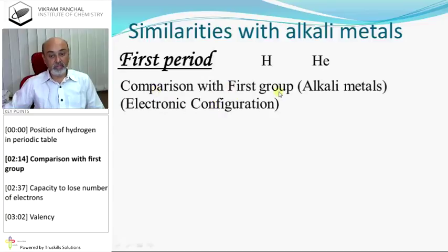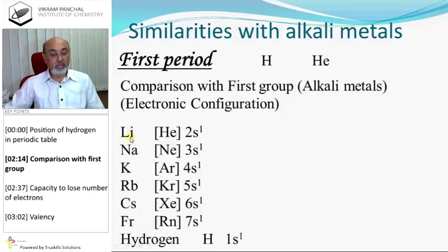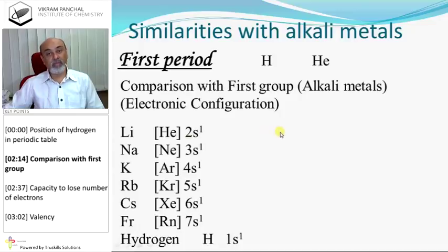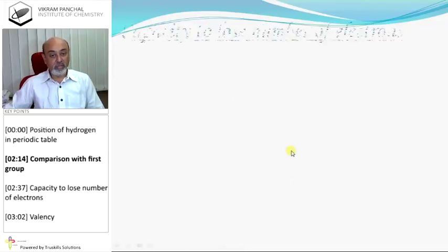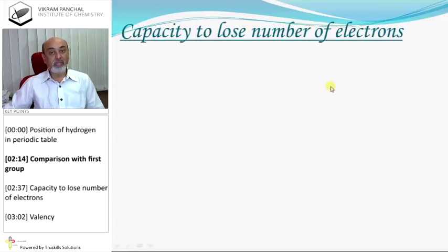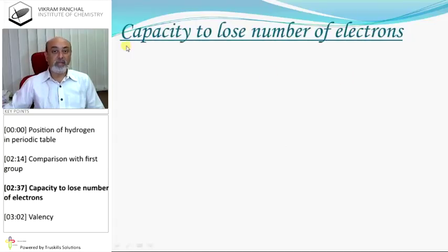Comparison with the first group. If you look at lithium, sodium, potassium, rubidium, etc., their common configuration is NS1. There is only one electron in the outermost shell of these elements. Hydrogen also has one electron in its outermost shell. Therefore, it is similar to alkali metals.